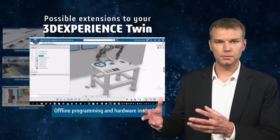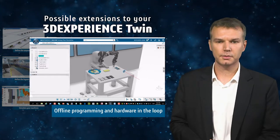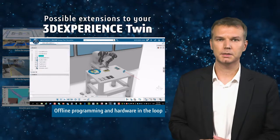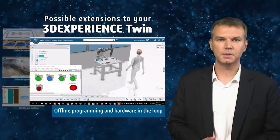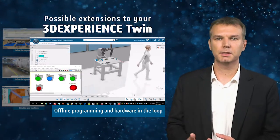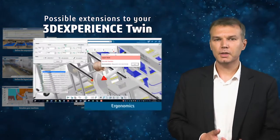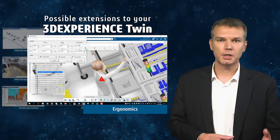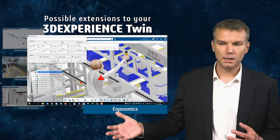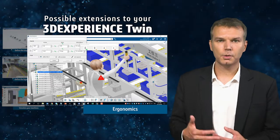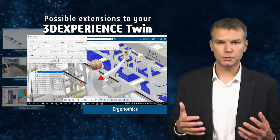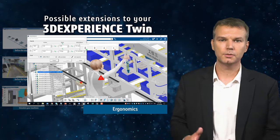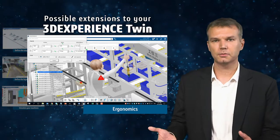By doing virtual commissioning, you can secure the fact that the equipment is going to be producing at the right pace, and that the program is going to behave as you expect. Another use case could be around ergonomics. As the environment is redesigned and changed, and as you may require to onboard new workers, you may want to check whether this environment is comfortable for different types of people — different types of mannequins.